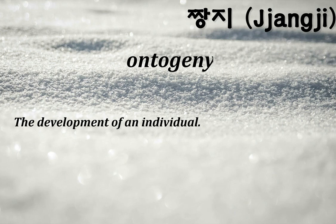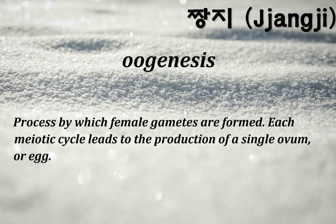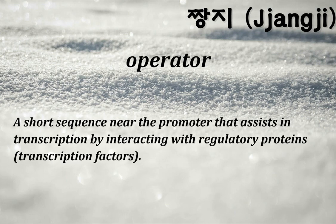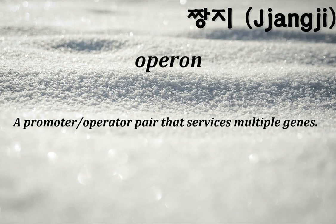Ontogeny: the development of an individual. Oogenesis: process by which female gametes are formed; each meiotic cycle leads to the production of a single ovum or egg. Operant conditioning: a type of associative learning based on trial and error. Operator: a short sequence near the promoter that assists in transcription by interacting with regulatory proteins (transcription factors).